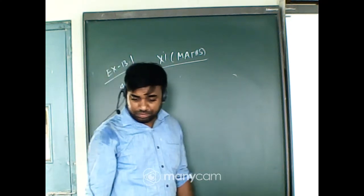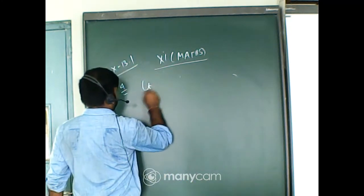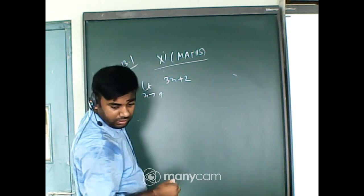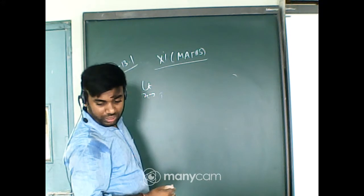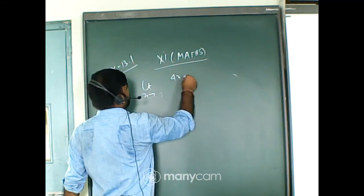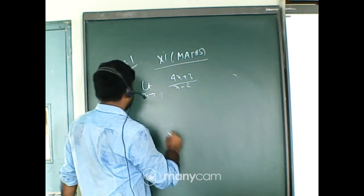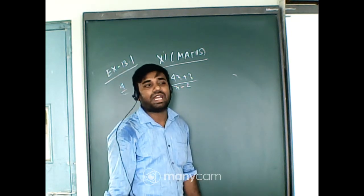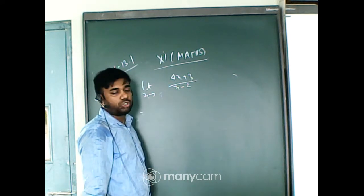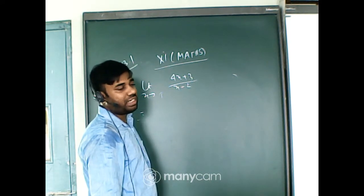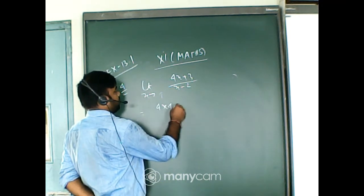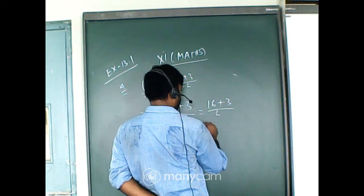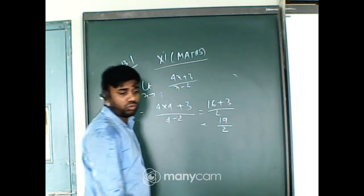Question number four: limit x tends to 4 of (4x + 3)/(x − 2). One thing — we choose factorization method only when the denominator is zero. Here if you put 4 in place of x, then 4 minus 2 equals 2, so the denominator is not zero. We can use direct substitution. The answer is 19/2.